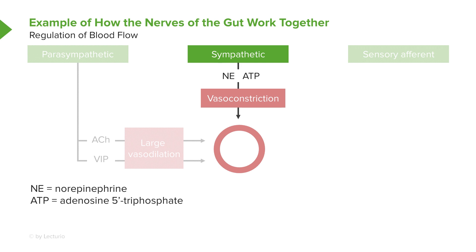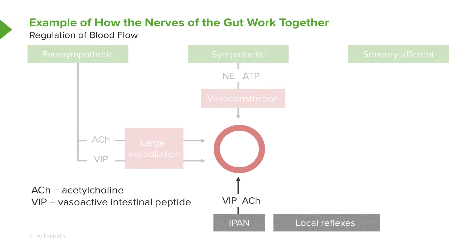There are also a lot of local reflexes involved in the GI system. With the enteric nervous system, these local reflexes also increase the amount of acetylcholine and vasoactive intestinal peptide, causing vasodilation.